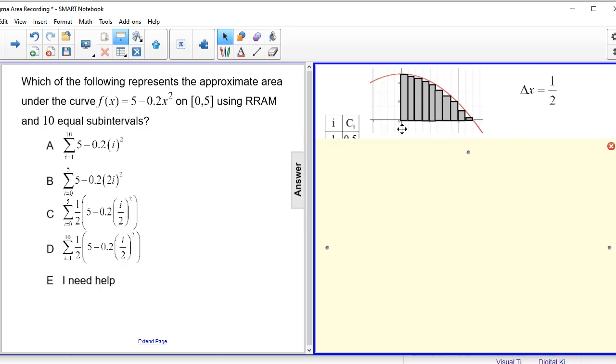So pictorially it's going to look like this. The curve bends down going through (5,0). There's my 10 subintervals and they run from 0 to 1/2 to 1 to 1.5, all the way up to 5. And since we're using the right side,